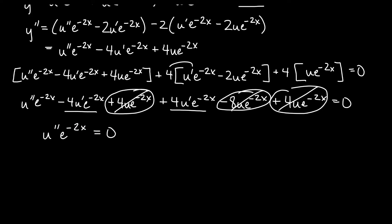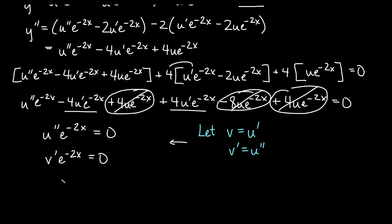So that's nice. For reduction of order, once we get rid of all our u terms, we let v equal u prime. If v is u prime, then v prime is u double prime. Making that substitution, we get v prime e to the negative 2x equals 0. We can write this as dv/dx times e to the negative 2x equals 0, and dividing both sides by e to the negative 2x gives dv/dx equals 0.